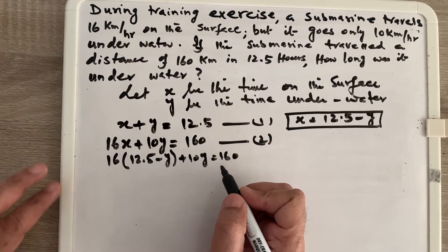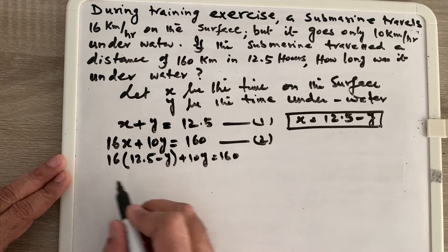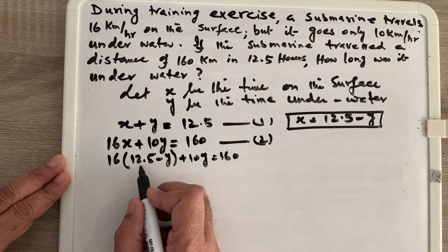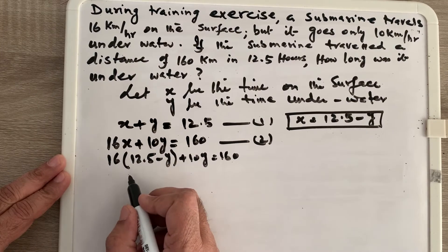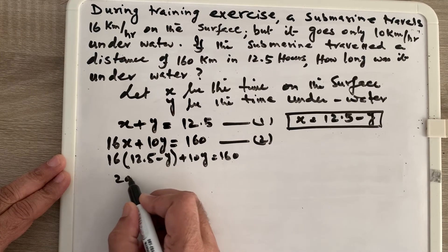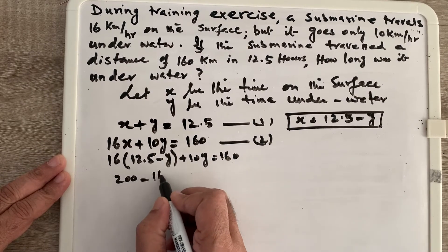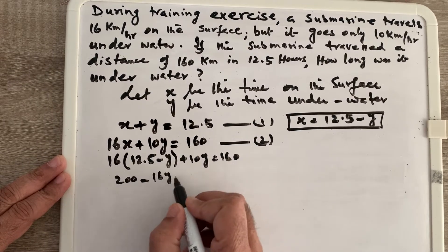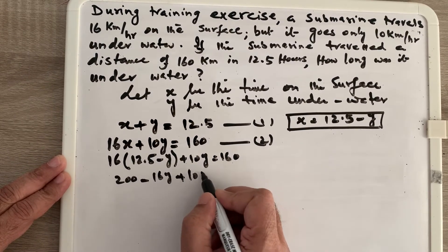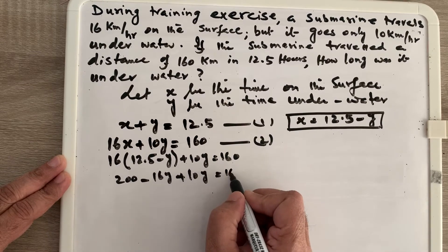Now I open up the bracket and solve for y. 16 times 12.5 is 200, so the equation becomes: 200 − 16y + 10y = 160.